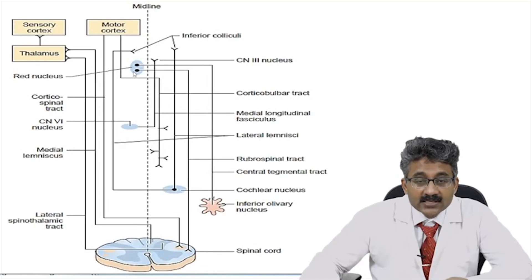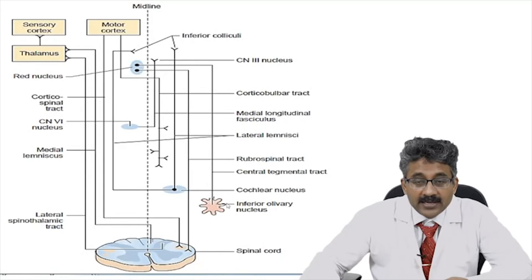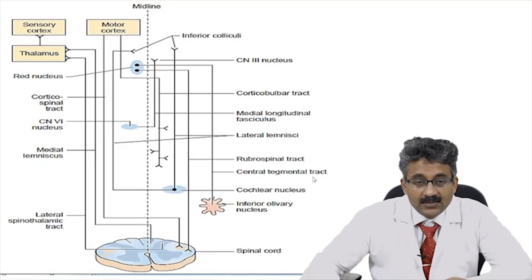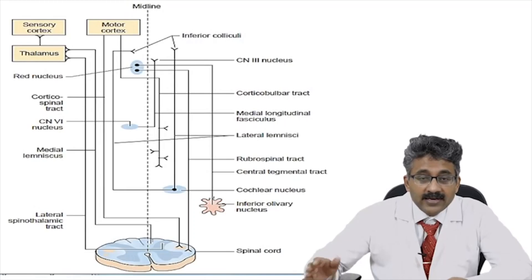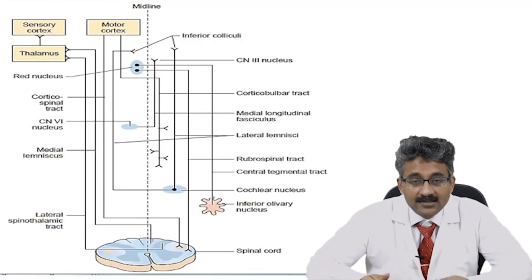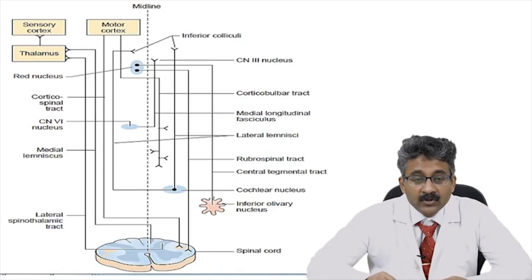The red nucleus supplies fibers to the spinal cord via the rubrospinal tract. The red nucleus also has a connection to the inferior olivary nucleus via the central tegmental tract. So to summarize: spinothalamic tract and medial lemniscus are the ascending tracts; corticospinal tract and corticobulbar tract are the descending tracts; the MLF connects the sixth nucleus to the third nucleus on the opposite side; and the corticobulbar tract connects to the cranial nuclei in the brainstem.